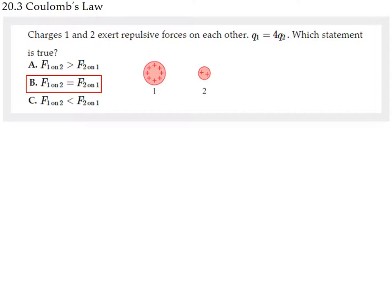A final clicker question: charges 1 and 2 exert repulsive forces on each other. Charge 1 has four times the charge of charge 2. Is the force of 1 on 2 larger than, smaller than, or equal to the force of 2 on 1? The answer is equal — all Coulomb force pairs are equal in magnitude, as Newton's third law requires.